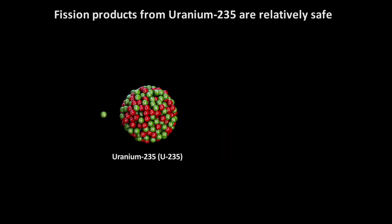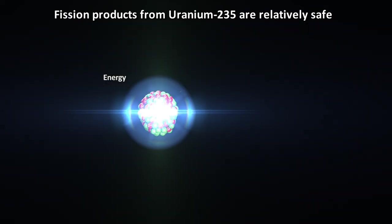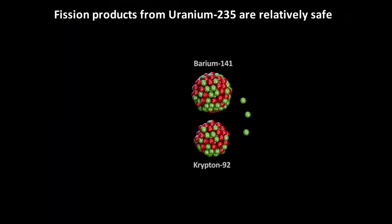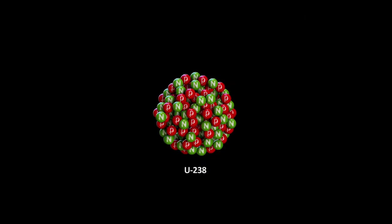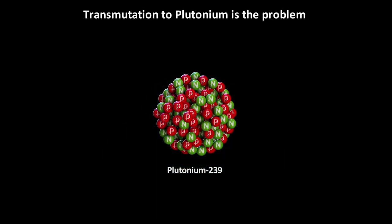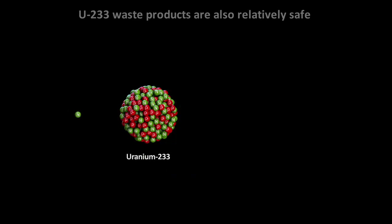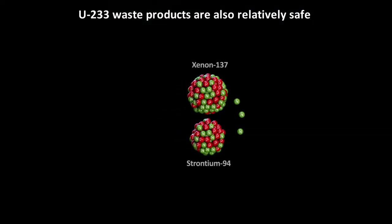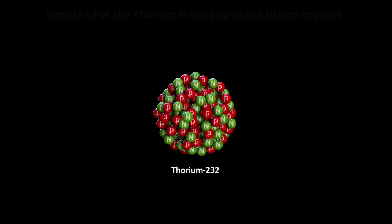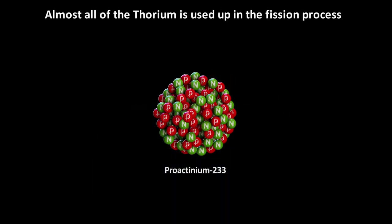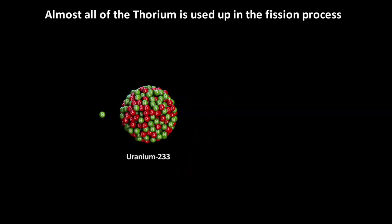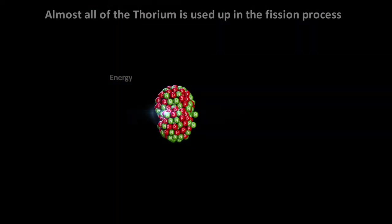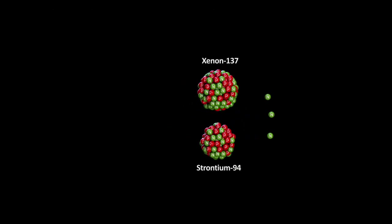Now remember that in uranium reactors, the waste problem is not really splitting uranium-235 because the fission waste products have a relatively short lifetime. It's the transmutation of the U-238 that causes problems. Like U-235, uranium-233 also creates waste products that are relatively safe. But the difference is that with thorium, almost all of it is eventually used up in the fission process. There is very little U-238 like in uranium reactors that can end up transmuting to americium and plutonium, which are radioactive and harmful to humans for long periods of time. This is a huge improvement over traditional uranium nuclear power plants.